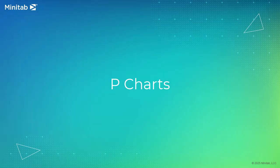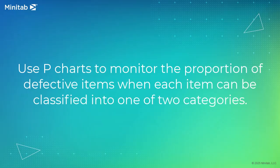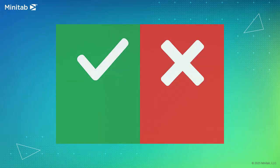Welcome to the video on P-Charts. You can use P-Charts to monitor the proportion of defective items when each item can be classified into one of two categories, such as Pass or Fail or Go-No-Go.